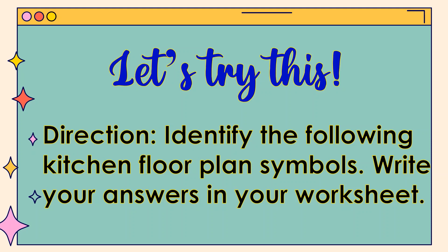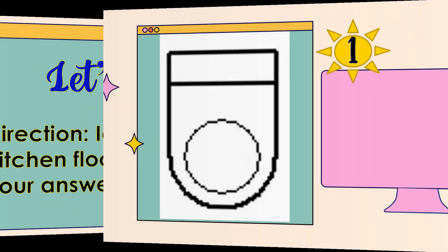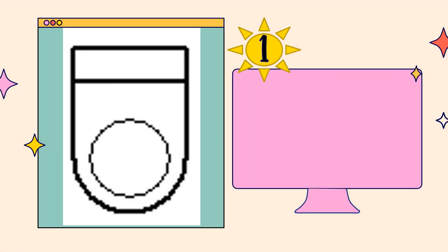Identify the following kitchen floor plan symbols. Write your answers in your worksheet. Okay, let's start! Number 1: What kitchen floor plan symbol is this? The correct answer is toilet.